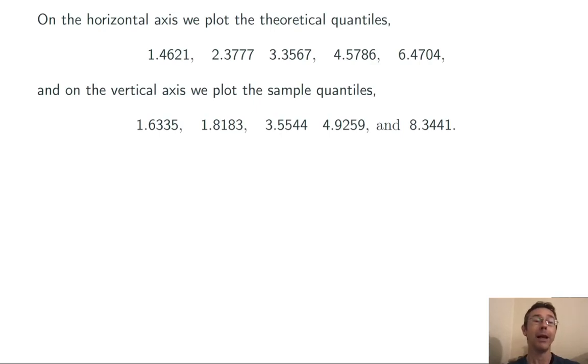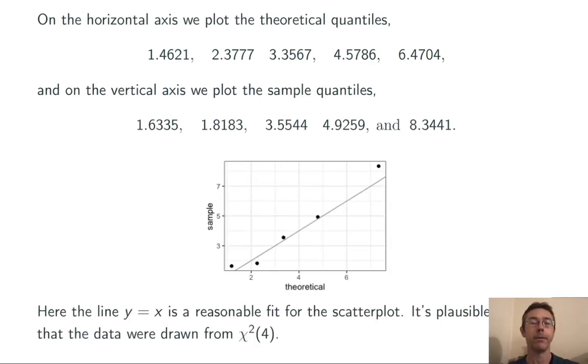I'm going to want to plot the theoretical quantiles that I just computed on the x-axis of a plot, and the sample quantiles, the numbers I was given, on the vertical. Here's what I get. I've also plotted the line y equals x, and here you can see that it's a reasonable fit for the data. So, it seems plausible that this data were drawn from the distribution chi-squared of 4.